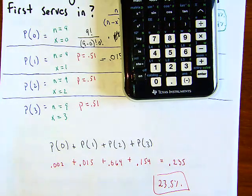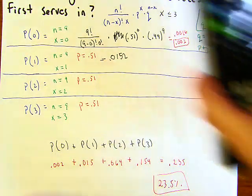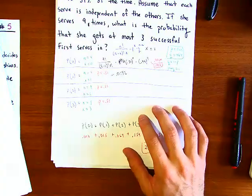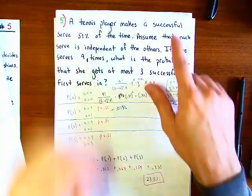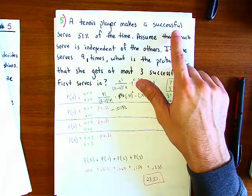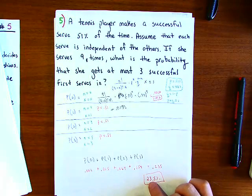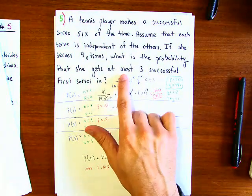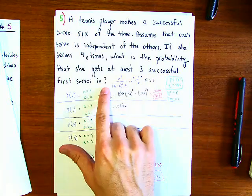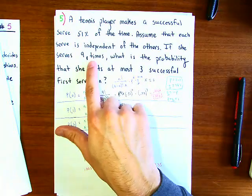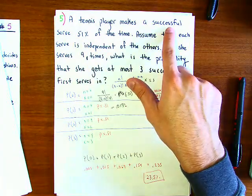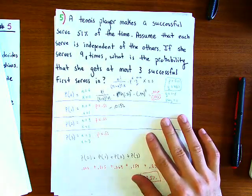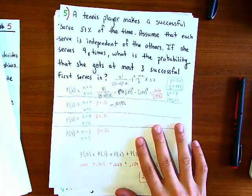So the answer is 0.235, meaning there is a 23.5% chance that the tennis player gets at most three successful first serves out of nine attempts, given that her probability of a successful serve is 51%.